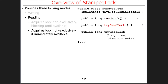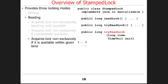There's also tryReadLock, which is a non-blocking call that gets the read lock if it's available — if there's nobody else writing. If there are other people reading, you'll get it; otherwise it returns a failure value. And then there's a timed tryReadLock, which is the timed version.